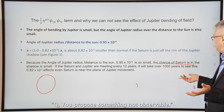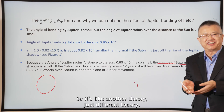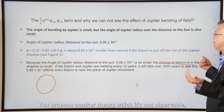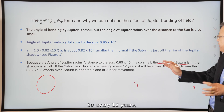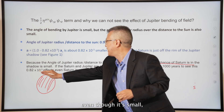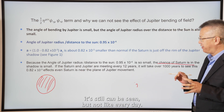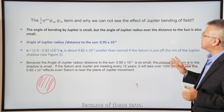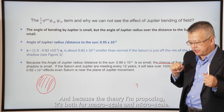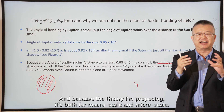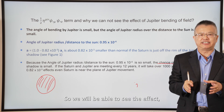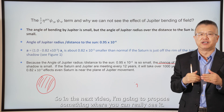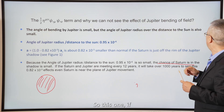Some colleagues say I'm proposing something unobservable — just another untestable theory. But even though the effect is small, it can still be seen over a long timescale, not dramatically every day. Because this theory applies at both macro and micro scales, we will be able to see the effect even in the solar system. In the next video, I'm going to propose something where you can really see it.